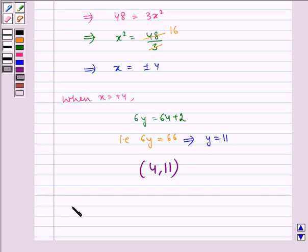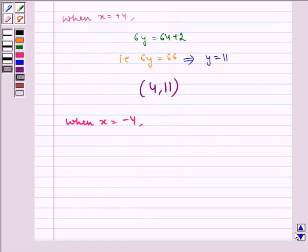Now, when x is equal to minus 4, 6y equals minus 64 plus 2. It implies 6y is equal to minus 62.